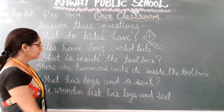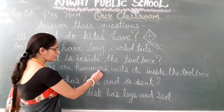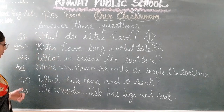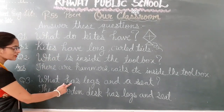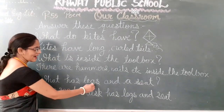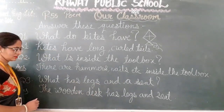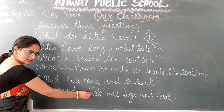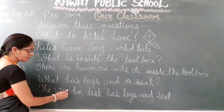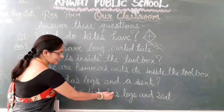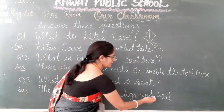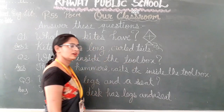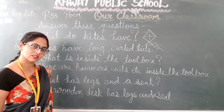What you have to learn — you have to learn hammers, nails. Question number three: what has legs and a seat? Answer is the wooden desk. The wooden desk has legs and a seat.